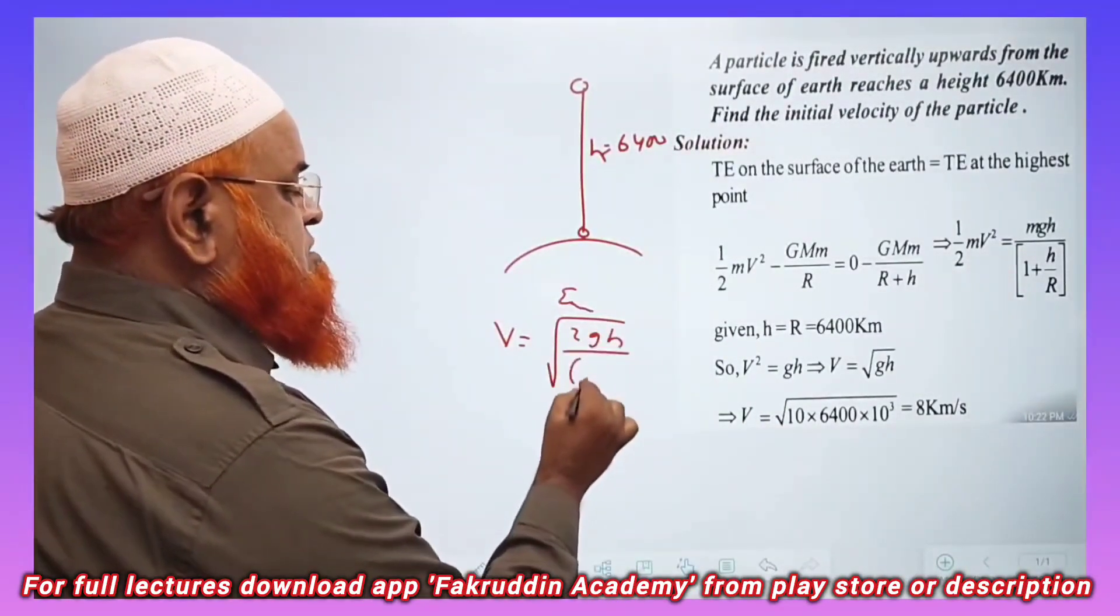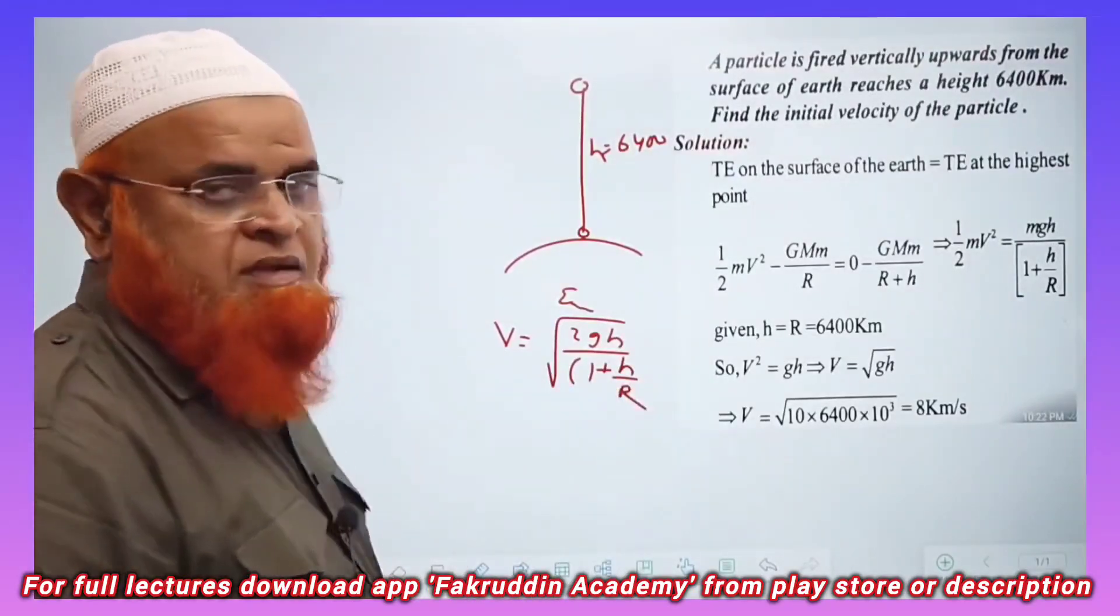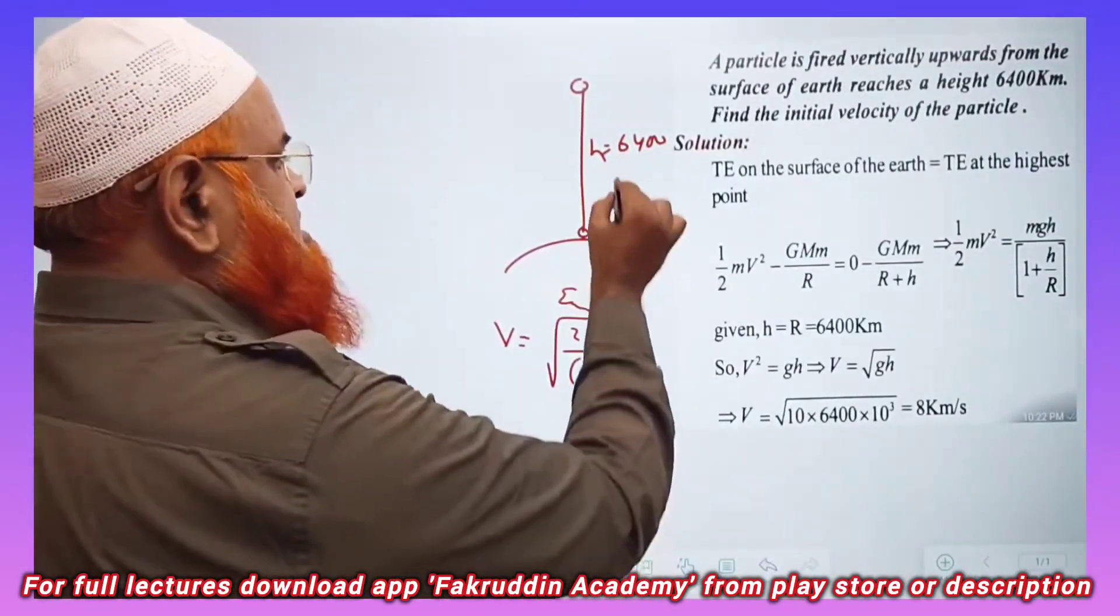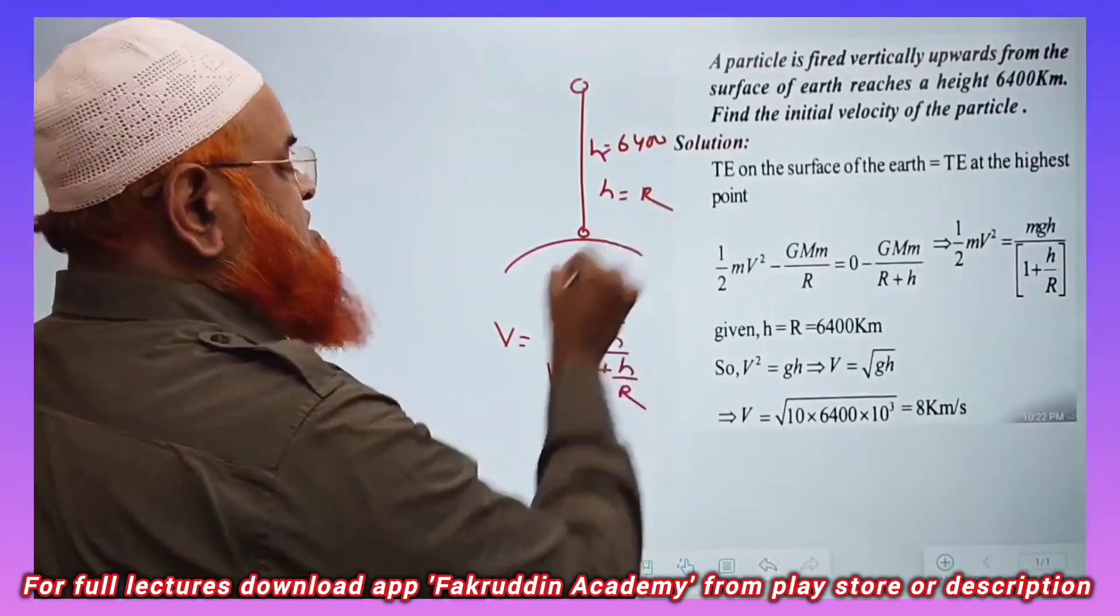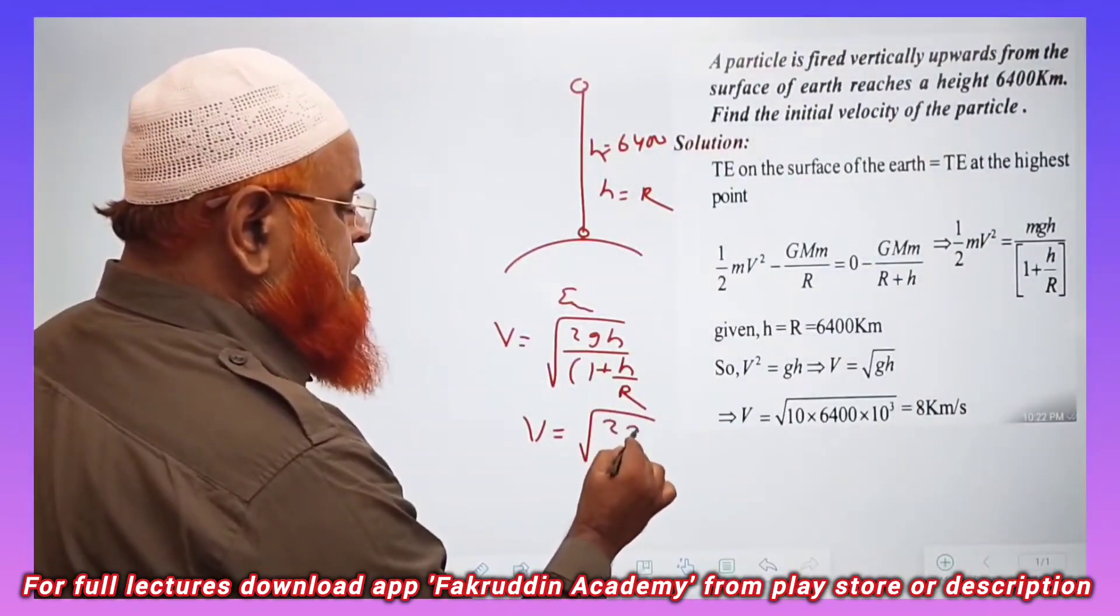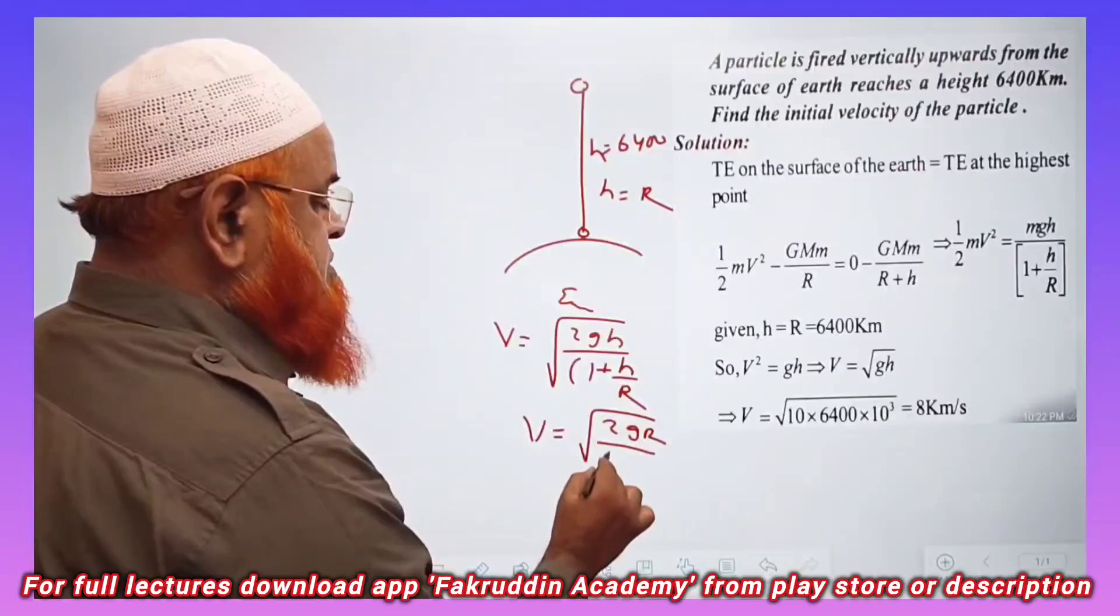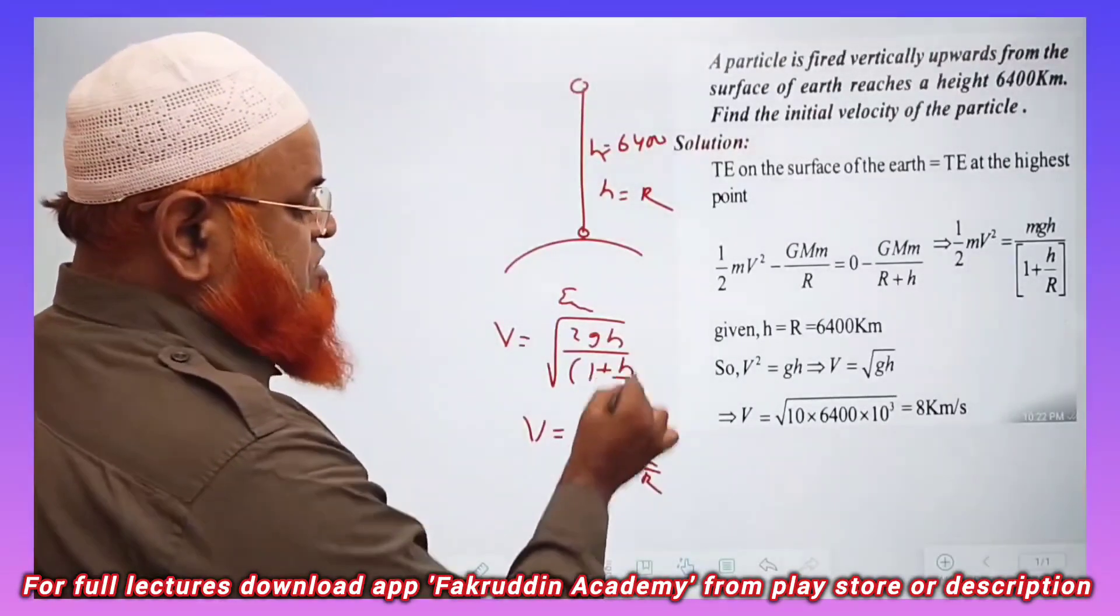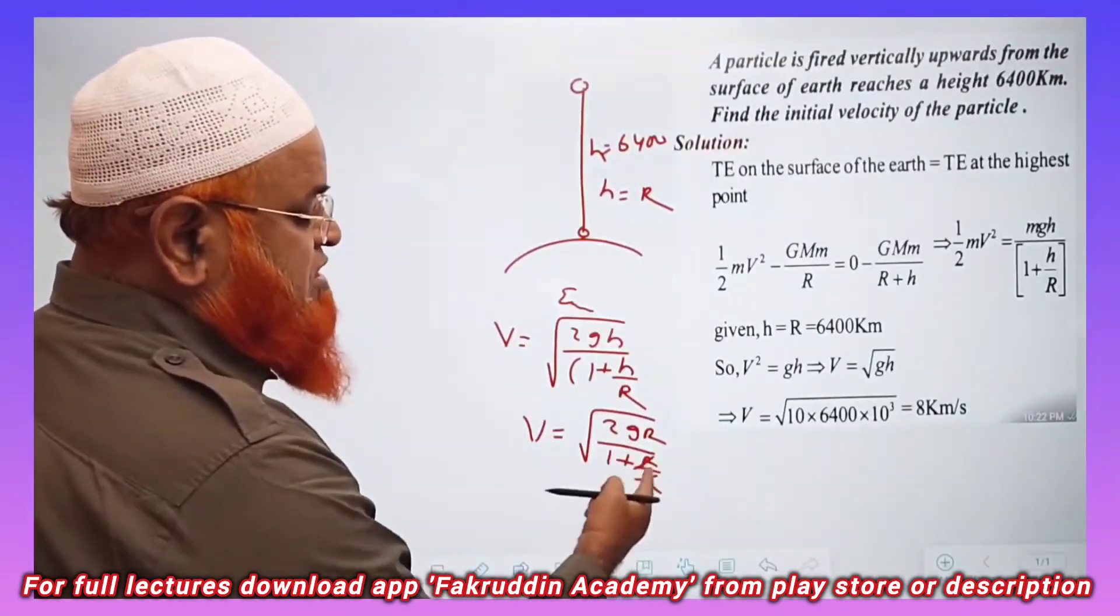And you all know that h equals r here. You can just substitute the value of h equals r. So V is equal to square root of 2gr divided by 1 plus r by r. H equals r you have substituted. So 1 plus 1, r by r gets cancelled here. 1 plus 1 is going to be 2.